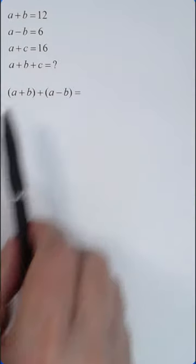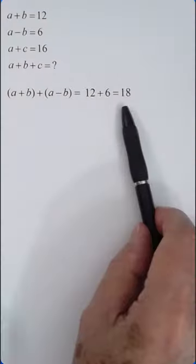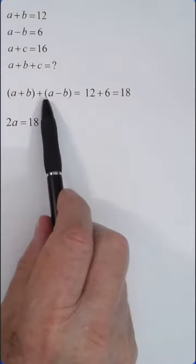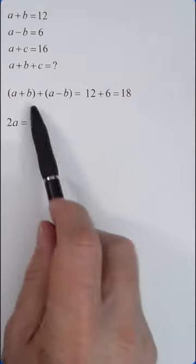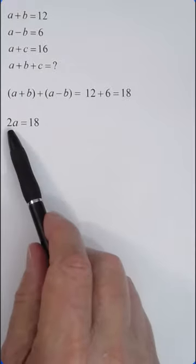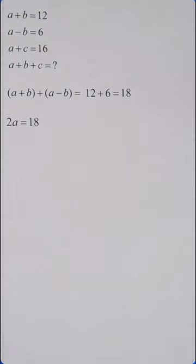It is going to be 12 plus 6, right? Which is 18. But a plus a is 2a and the b's cancel. So we have 2a is equal to 18, which means that a is equal to 9.